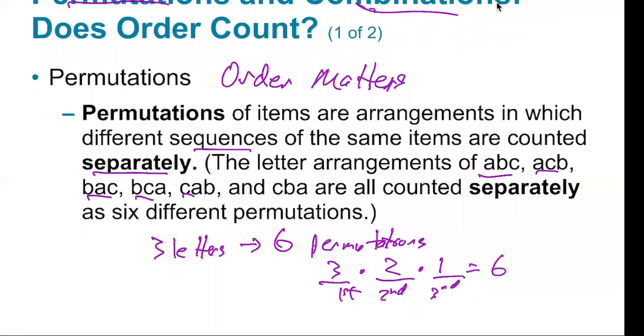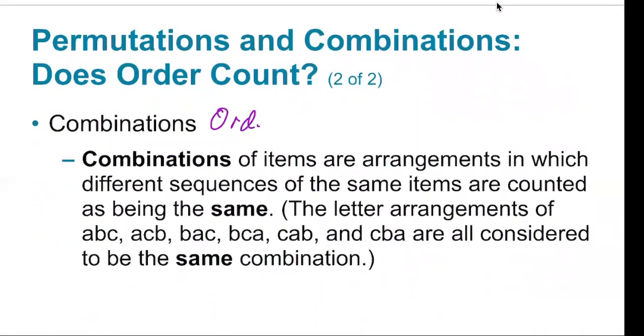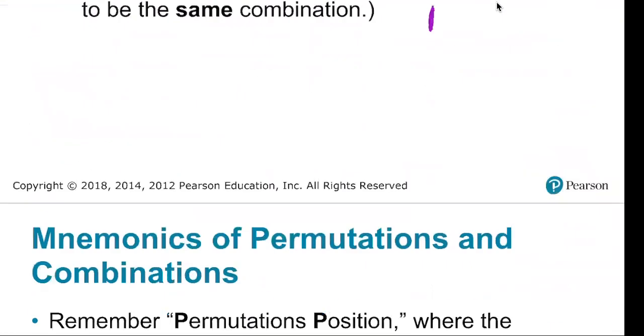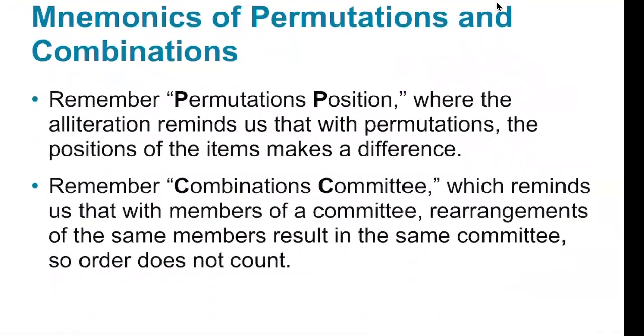Now compare this to a combination where order does not matter. Same three letters - these are all the same, so there's really only one combination of these three letters. When you're counting, you decide: is it a permutation or combination problem? We'll do some examples. If you like mnemonics, here you go: permutations = position, combinations = committee, because if you're just forming a committee, I actually think of a team where I don't care about the order of people that I select.